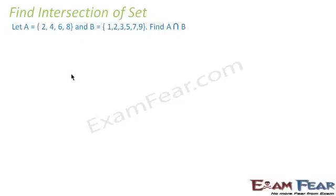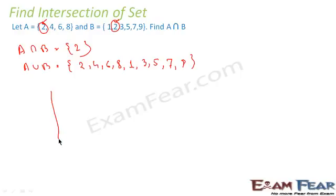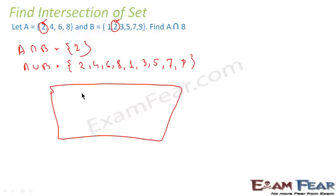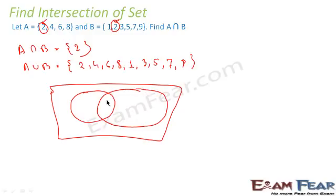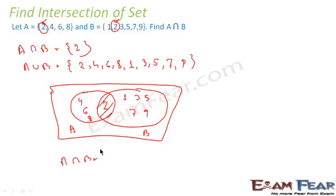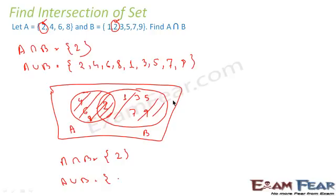To represent the same using a Venn diagram: since 2 is the common element, the sets are intersecting. We place 2 in the overlapping region, label the sets A and B, place 4, 6, 8 in A's side, and 1, 3, 5, 7, 9 in B's side. When we say A intersection B we look at just the overlapping area — the answer is {2}. When we say A union B we look at the whole area, giving us {4, 6, 8, 2, 1, 3, 5, 7, 9}.